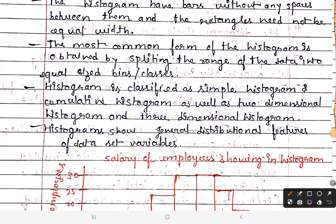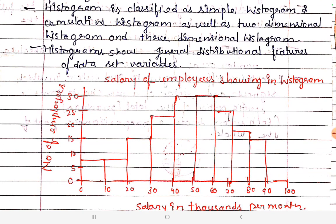The most common form of the histogram is obtained by splitting the range of the data into equal-size bins and classes. Histograms are classified as simple histogram, cumulative histogram, two-dimensional histogram, and three-dimensional histogram. A histogram shows the general distribution features of the data set variables and represents data distribution.